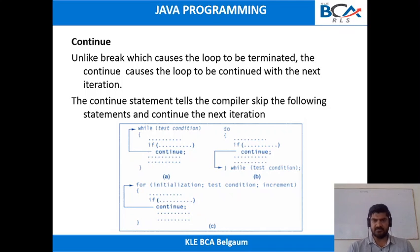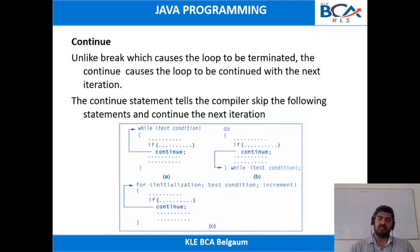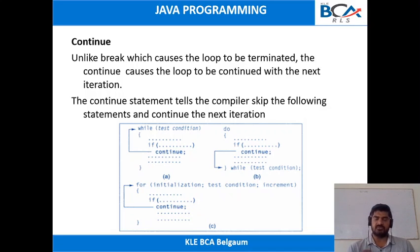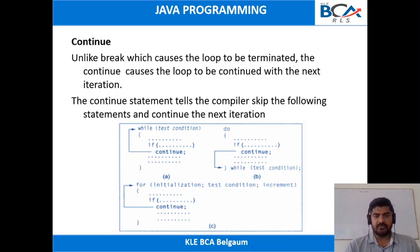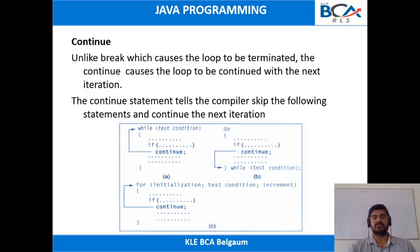If that condition is satisfied and we have a continue statement, it means that again the iteration of that for loop is started. Whenever that if condition is satisfied, again the for loop iteration will begin from the start. The continue statement tells the compiler to skip the following statements and continue with the next iteration.